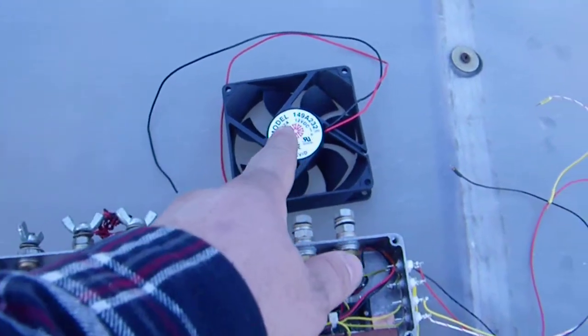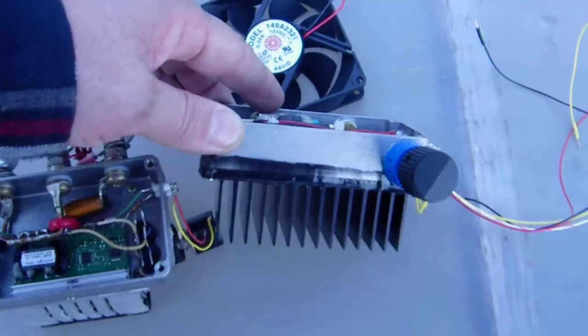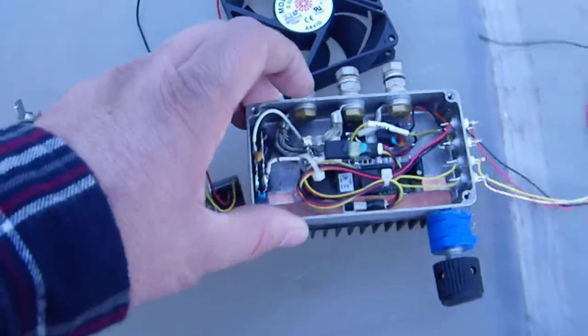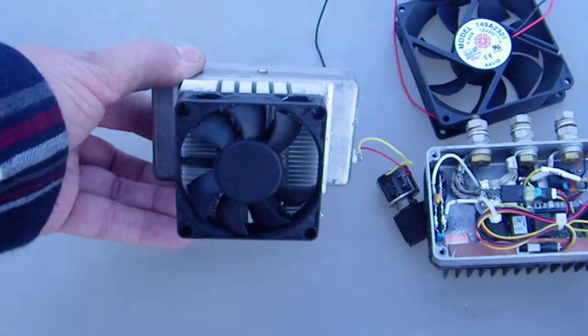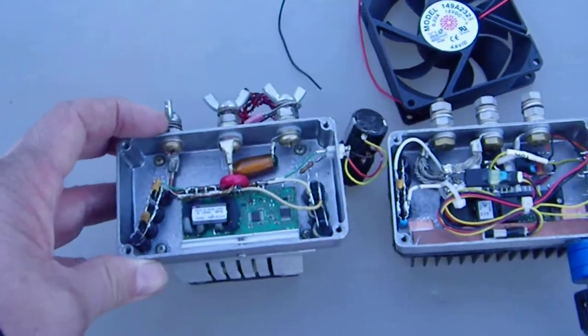Now, that's the fan for the 60. It goes on this heat sink back here. This one already has a fan on it and a big heat sink.